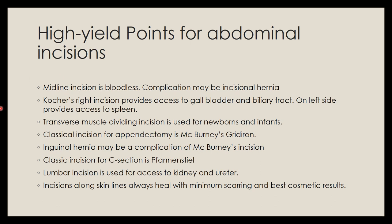High-yield points for abdominal incisions: the midline incision is relatively bloodless; its complication can be incisional hernia. Kocher's incision on the right is used for the gallbladder and biliary tract; extended left for the spleen. McBurney's incision is the classical incision for appendectomy; its complication can be inguinal hernia due to injury to the iliohypogastric nerves. The Pfannenstiel incision is the classical incision for cesarean section. A lumbar incision can be used to access the kidney and ureter. Incisions along skin lines heal with minimum scarring and best cosmetic results.